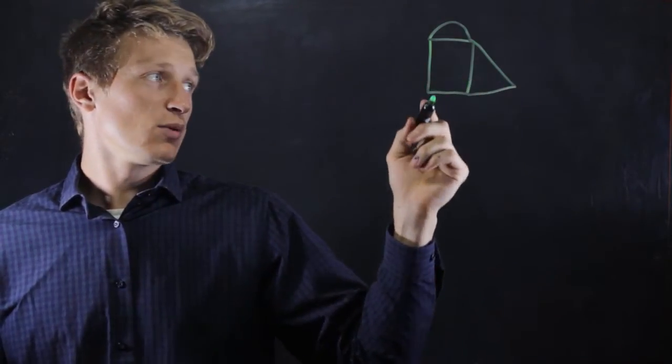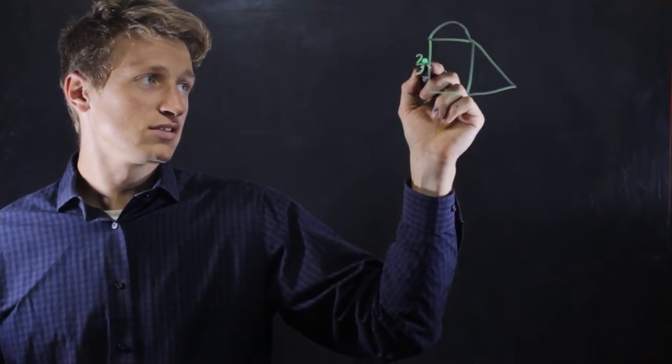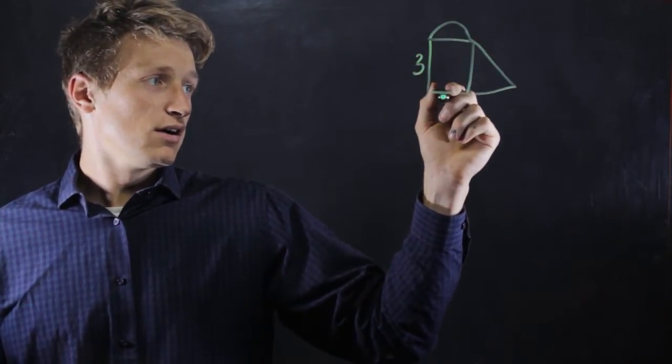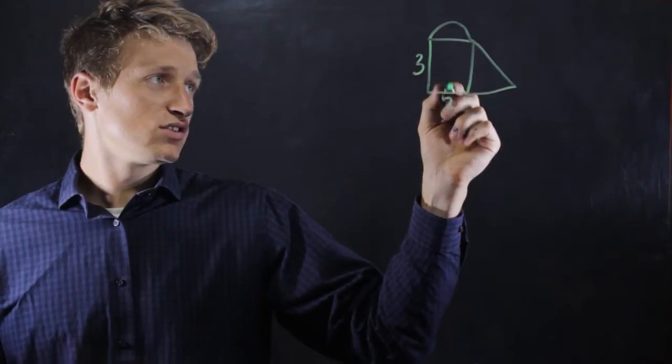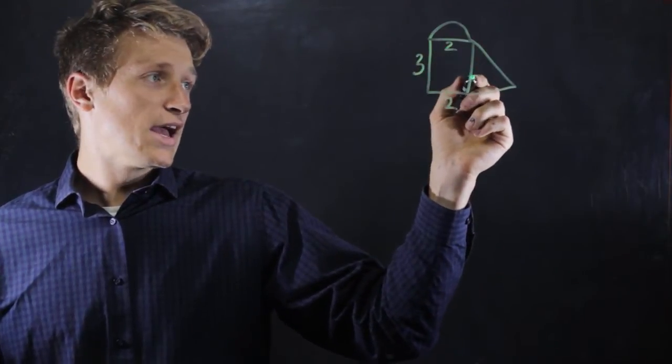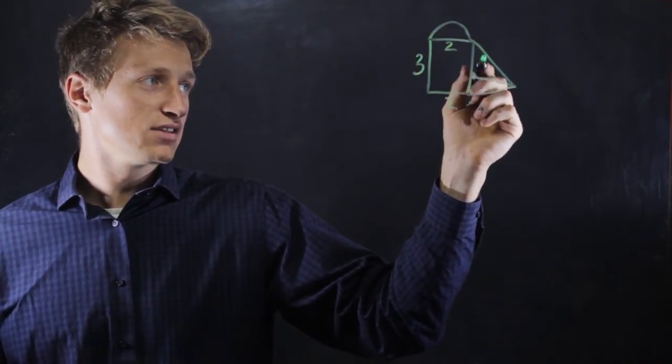Let's say we're given the length of this is 3, the width of this is 2, which means this is 2, and the height of this is 4.